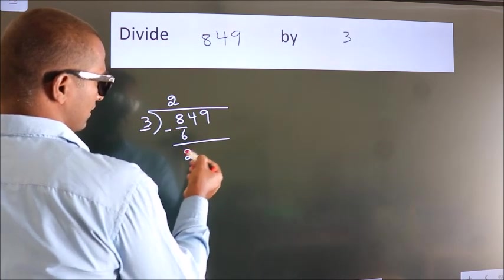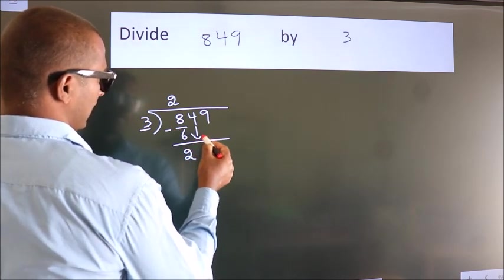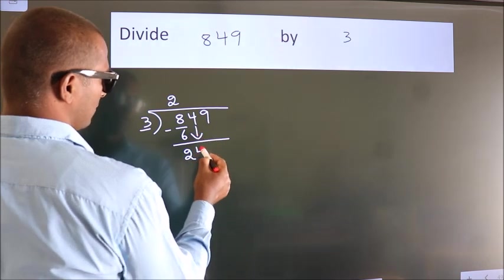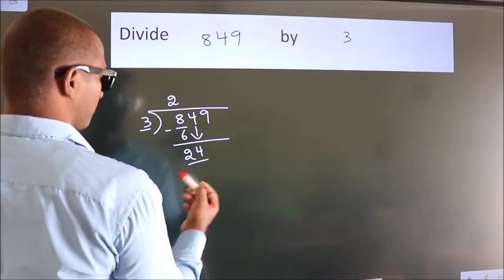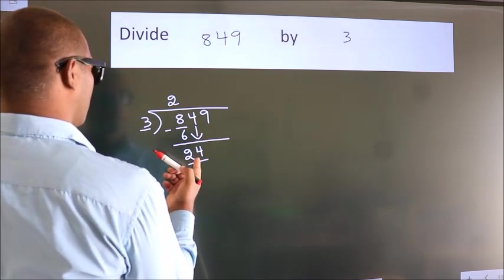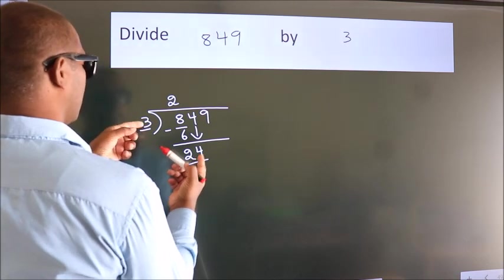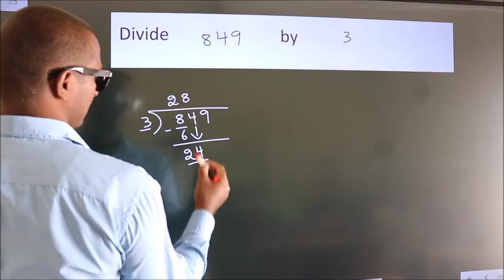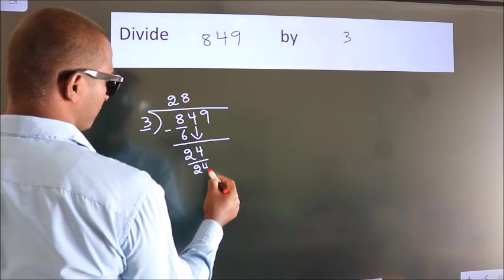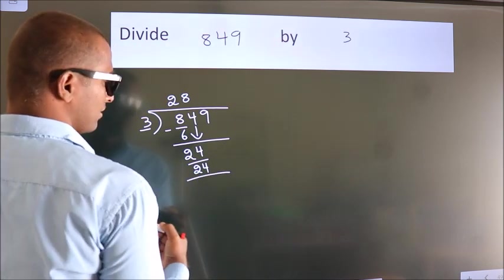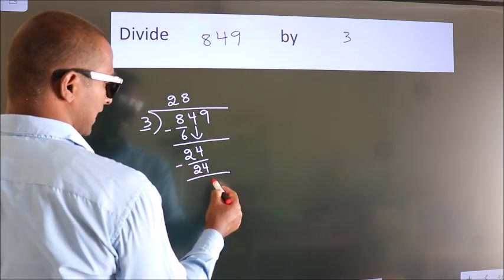After this, bring down the beside number. So 4 down. So 24. When do we get 24? In 3 table. 3 8s, 24. Now we subtract. We get 0.